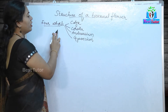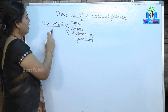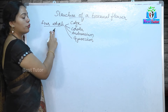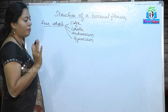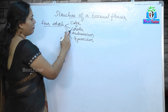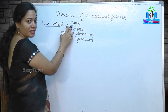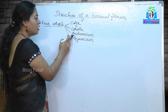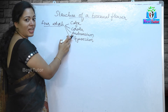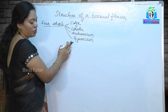When we see the structure of a flower, it is divided into four whorls or four floral parts. The first floral part is known as calyx, second is known as corolla, third is known as androecium, and fourth is known as gynoecium.